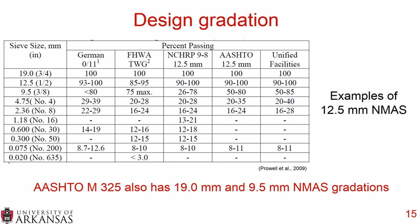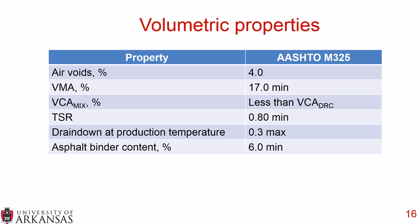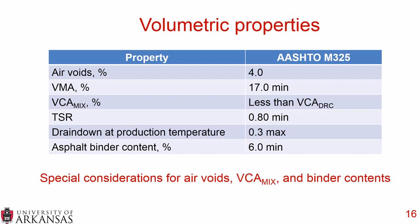Transitioning to volumetric properties: air voids target 4%, per AASHTO M325. VMA minimum is 17%. We also have VCA for both the mix and the DRC — the dry rodded condition. Once you have your mix, you need the tensile strength ratio at 0.80 minimum, drain down at production temperature at 0.3% maximum, and asphalt binder content at a minimum of 6%. There are special considerations for the air voids, VCA of the mix, and binder content, particularly around that VCA mix, which is not typically seen in standard asphalt concrete mix design.